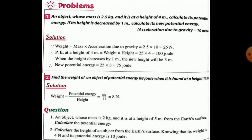We have two questions for you. Number one: an object whose mass is 2 kilograms is at a height of 5 meters from the Earth's surface — calculate the potential energy. Number two: calculate the height of an object from the Earth's surface, knowing that its weight is 4 Newton and its potential energy is 10 joules.